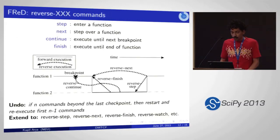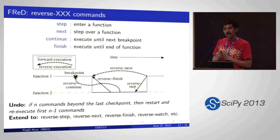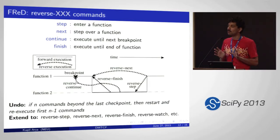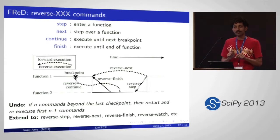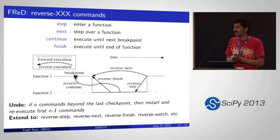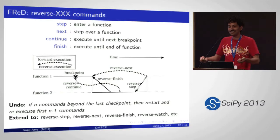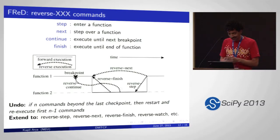By sitting in between, FRED introduces a set of reverse commands. You all know what step and next do. If you've stepped over a function but the problem was inside it, you'd normally have to restart from the beginning and step in. With FRED, you can just do an undo. Implementing undo is straightforward from a checkpointing perspective: restart from the last checkpoint, and if you had n steps, execute n minus one commands. Similarly, you can extend this to reverse-finish and reverse-step.